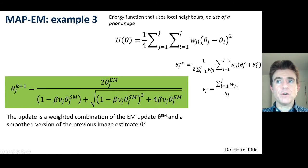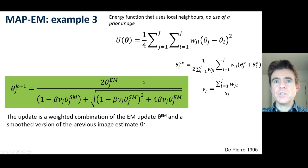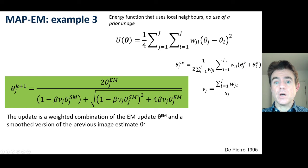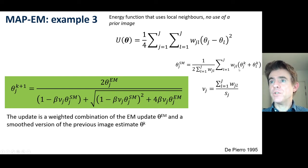De Piero found a very clever way of building that into the MAP framework. The resulting expression is very similar to the prior image formulation, except instead of using some prior image, we use a smoothed update of the current estimate — and that accounts for the weighted quadratic prior in the MAP objective.